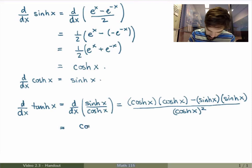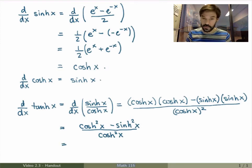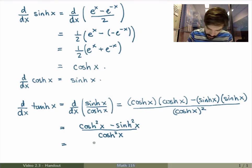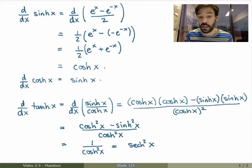So this is just hyperbolic cosine squared minus hyperbolic sine squared over hyperbolic cosine squared. But we've just proved that these satisfy the hyperbolic identity: hyperbolic cosine squared minus hyperbolic sine squared equals one. So this is just one over hyperbolic cosine squared, which is really just the hyperbolic secant squared. So the derivative of hyperbolic tan is hyperbolic secant squared, just like it is for trig functions.